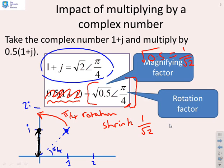Because the original modulus was root 2, you've shrunk it from a modulus of root 2 to a modulus of 1, and you've rotated it so the argument, instead of being pi by 4, is now pi by 2.